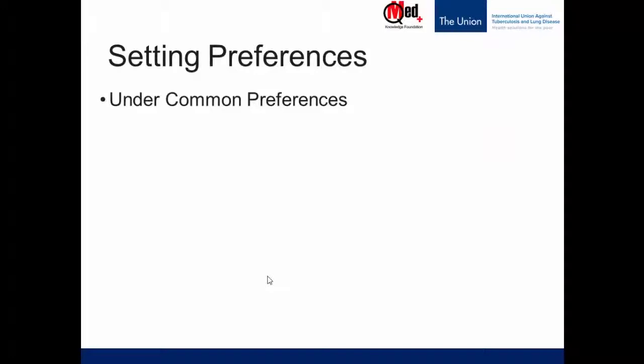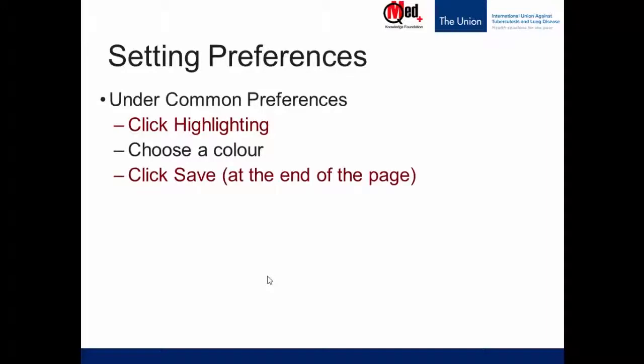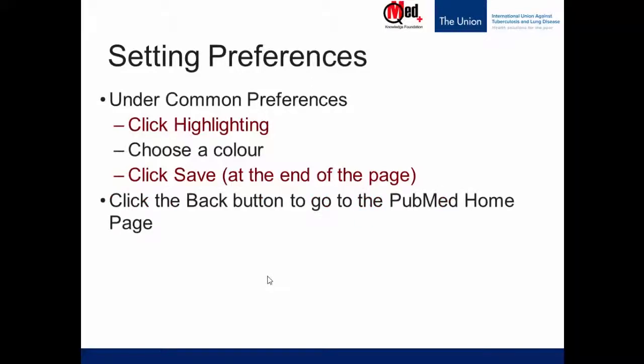When you click NCBI site preferences, you have something called common preferences. Under that, there is a link which says highlighting. Click highlighting, choose a color and click save. Once you do that, when you run a search, your search terms will show up in that color. Then click the back button and you'll go back to the PubMed homepage. Let's go online and take a look at how we do all this.